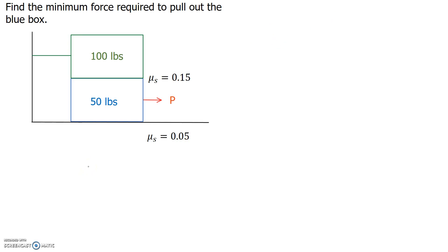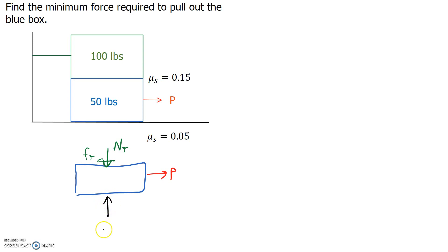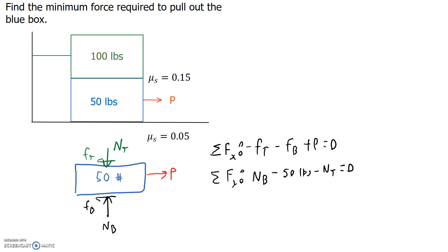This is a little tricky because the blue box has the green box sitting on top of it, which is connected to the wall. Let's draw a free body diagram of the blue box. We have our pulling force, the normal force of the top box, the friction force of the top box, the normal force of the bottom surface, and the friction force of the bottom surface. Writing our equilibrium equations for the bottom box, we see we have two equations with five unknowns: friction on the top, friction on the bottom, normal on the bottom, normal on the top, and our pulling force.